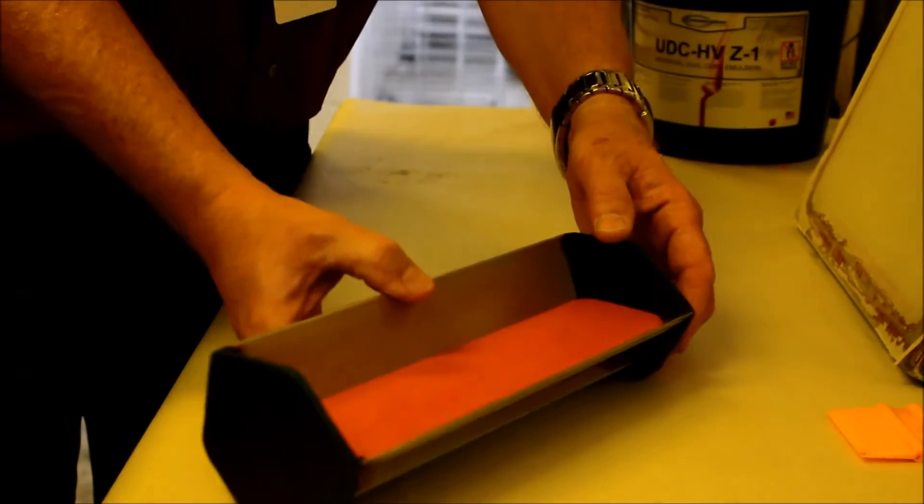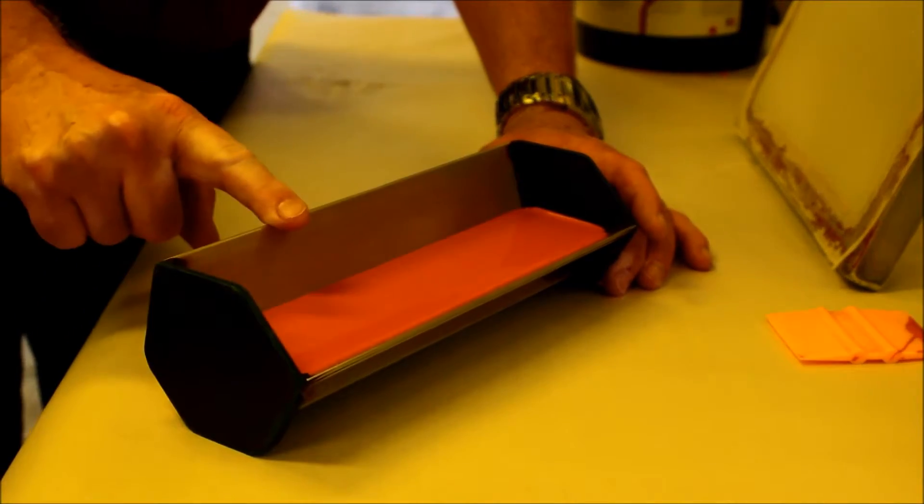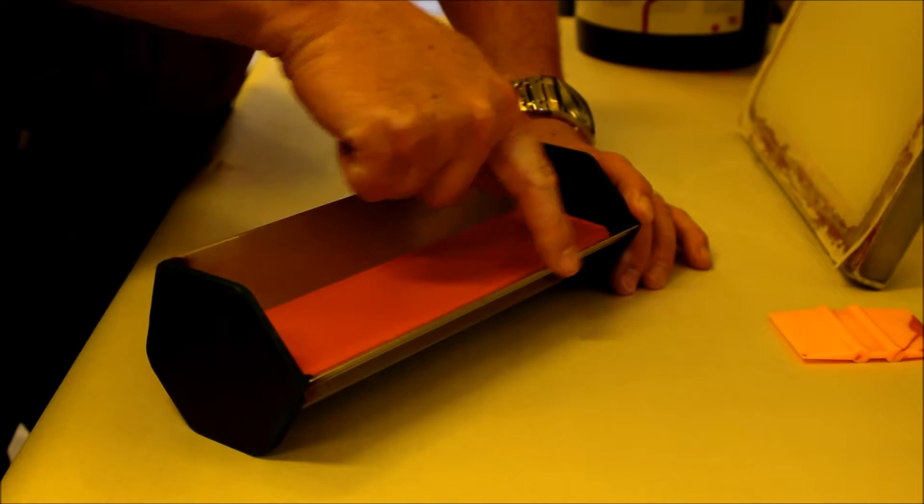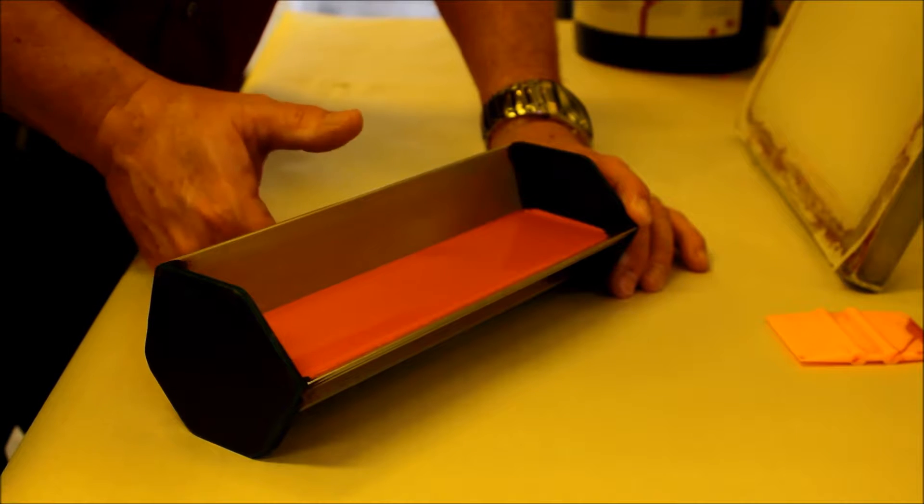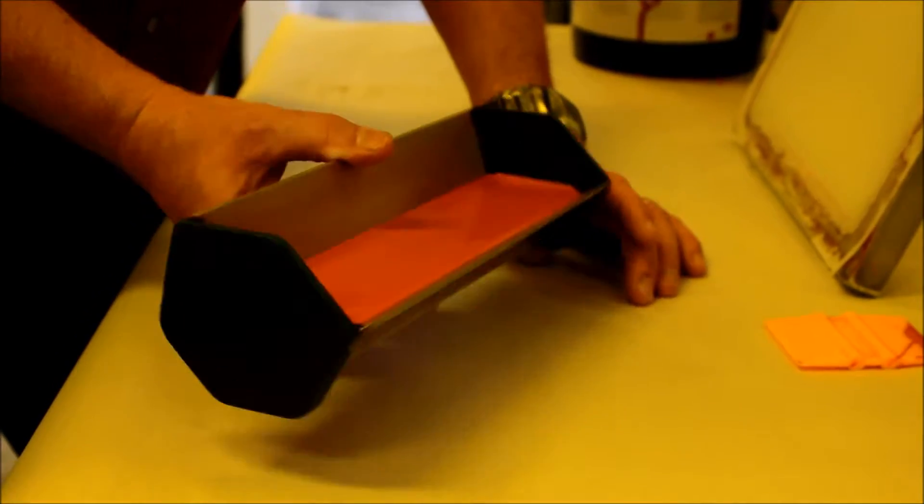Now you might notice there's two different edges. There's a sharp edge and a rounded edge. What we want to use to apply the emulsion to our screen with is the sharp edge of the coater. So when you grab the coater, we're going to put our thumb right in the middle on the rounded edge side.